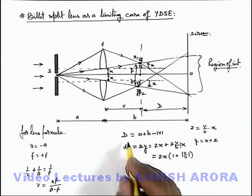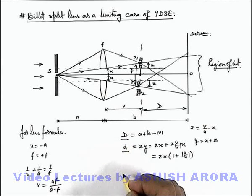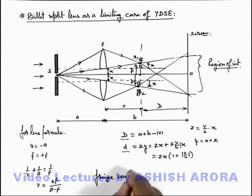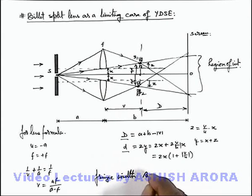For this situation, if we are having the values of capital D and small d, so in this situation the value of small d here is 2y and we can write the value as twice of x. We can directly write the value of fringe width in this region, and fringe width β we can write as λD/d. On substituting these values, we'll get the fringe width.